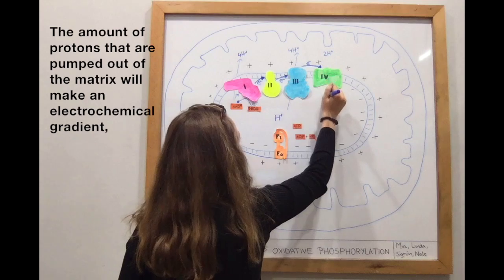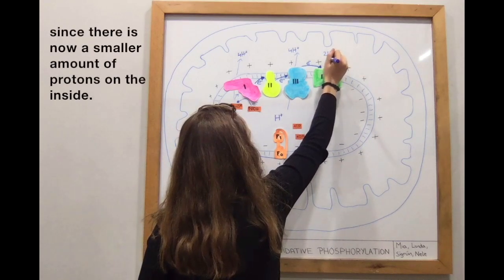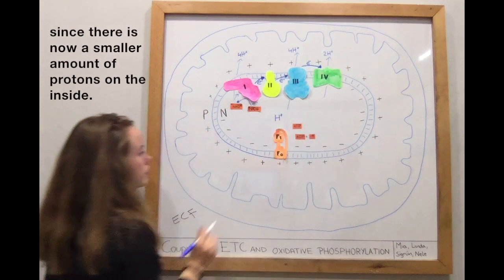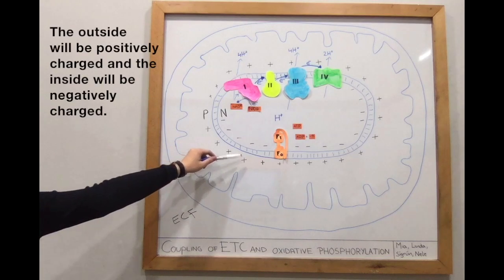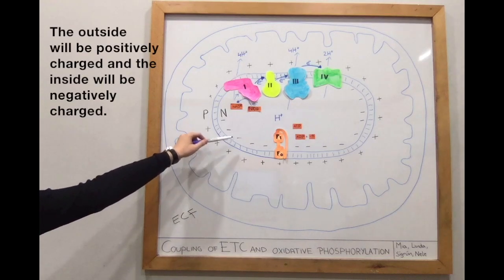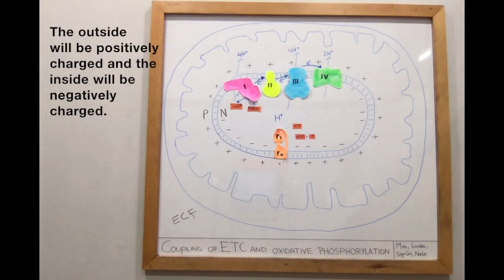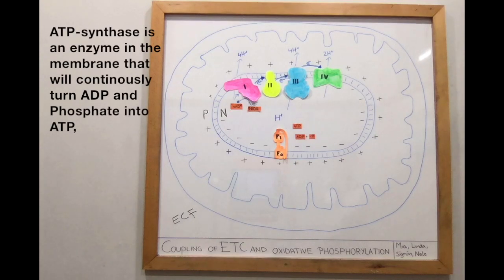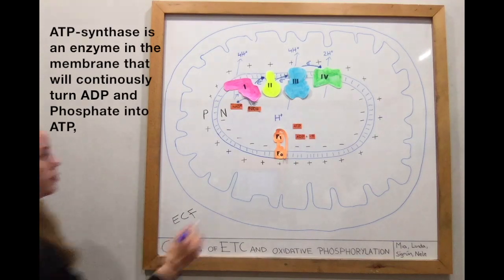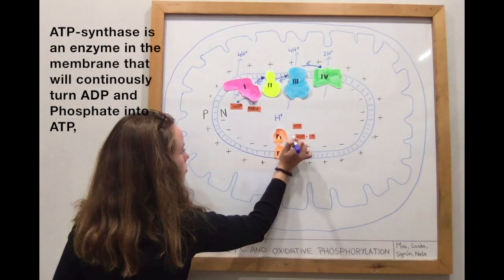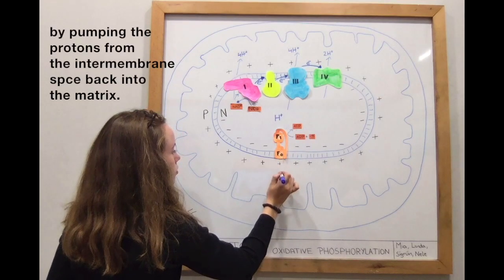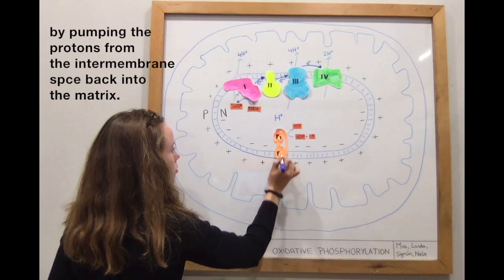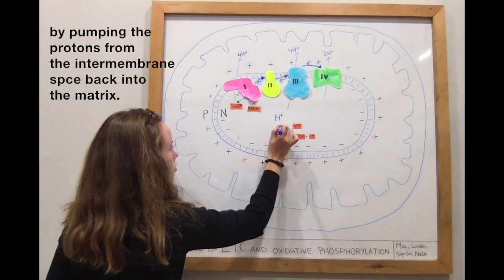The amount of protons pumped out of the matrix will create an electrochemical gradient. Since there is now a smaller amount of protons on the inside, the outside will be positively charged and the inside will be negatively charged. ATP synthase is an enzyme in the membrane that will continuously turn ADP and phosphate into ATP by pumping protons from the intermembrane space back into the matrix.